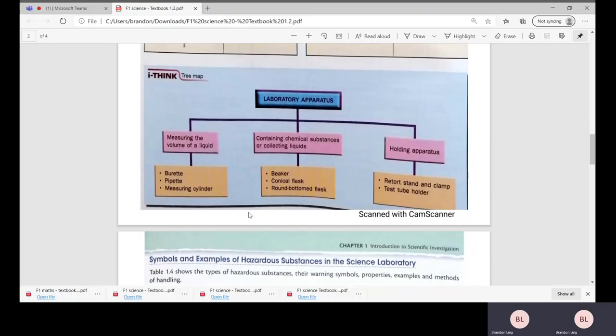All the lab apparatus in our science lab can be used for measuring volume, containing chemical substances, and holding apparatus, depending on what we want and our objectives of the experiment. These are the examples on the orange boxes: burettes, pipettes, measuring cylinder.